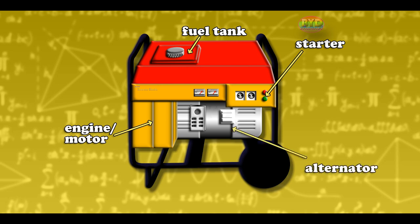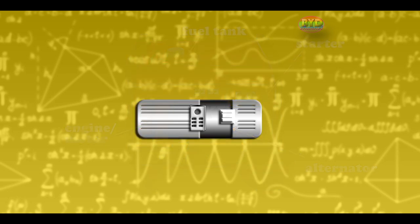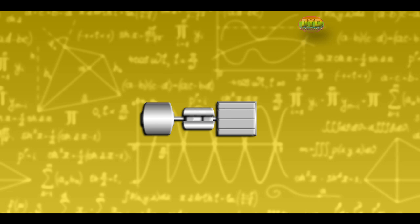Alternator, also known as gen head, is a part of a generator that produces electrical output from mechanical inputs provided by the engine. It contains assembly of stationary and moving parts wrapped in housing.